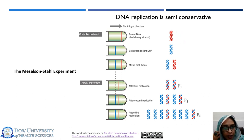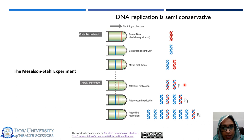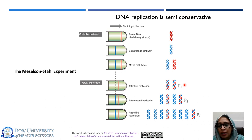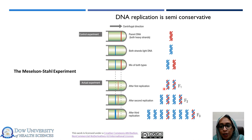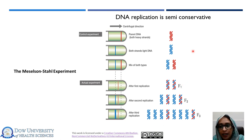DNA collected after the first round of replication — from cells grown in N14 for one generation — showed intermediate density, indicating that half of their strands contained the heavier isotopic nitrogen and half contained N14 nitrogen.